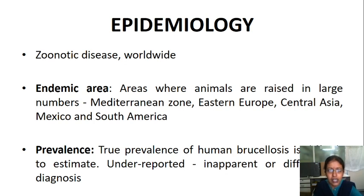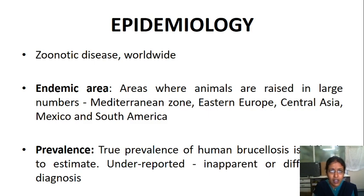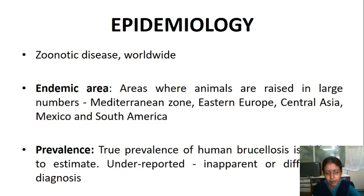Epidemiology: brucellosis is a zoonotic disease worldwide in distribution. Endemic areas where animals are reared in large numbers include the Mediterranean zone, Eastern Europe, Central Asia, Mexico, and South America. It is rare in most European countries, Australia, and North America. True prevalence of human brucellosis is very difficult to estimate because most cases are underreported due to inapparent infections or difficulty in diagnosis.